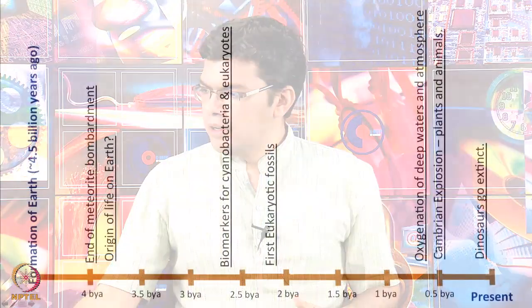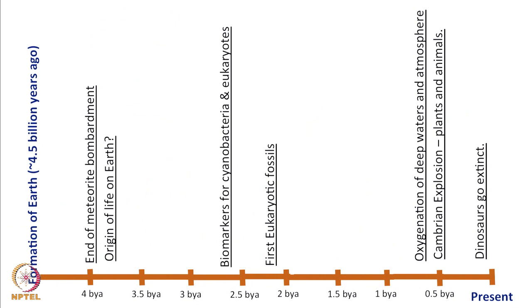Let us start our discussion with a brief timeline of processes on Earth. The x-axis here is time and the rightmost endpoint represents the present. Each of these bars represents 500 million years or half a billion years. Going all the way back to the left, we get formation of Earth happening 4.5 billion years ago — this is just to get an estimate of how long the process of life has been going on on our planet.